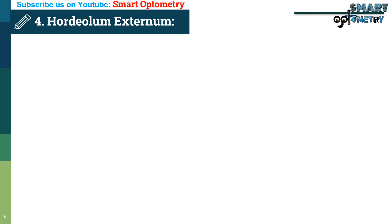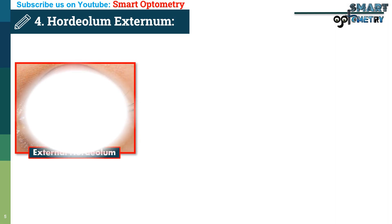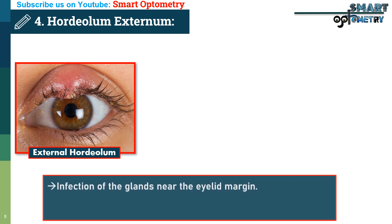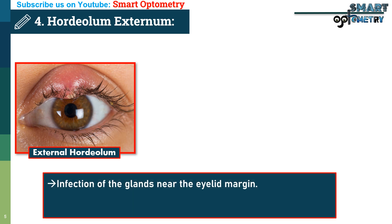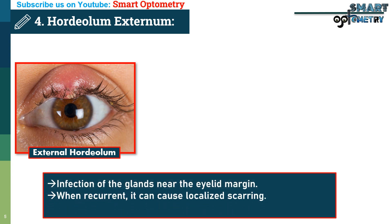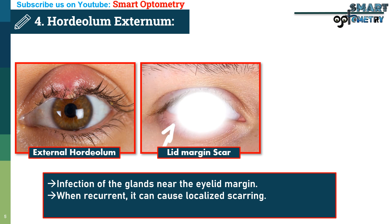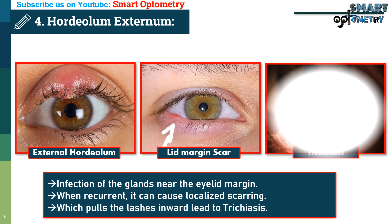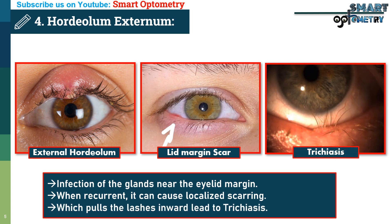4. External hordeolum or stye. Hordeolum externum, or stye, is an infection of the glands near the eyelid margin. When recurrent, it can cause localized scarring, which pulls the lashes inward and leads to trichiasis formation.